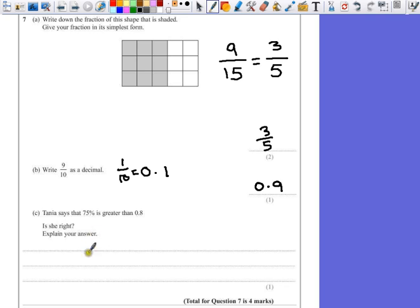Without an explanation, we will get zero marks. Now 75% can also be written as 3 quarters, or we can also say that 75% can be written as 0.75.